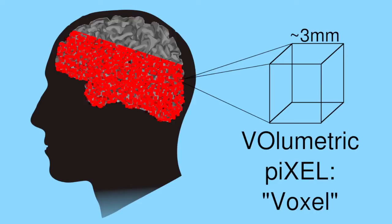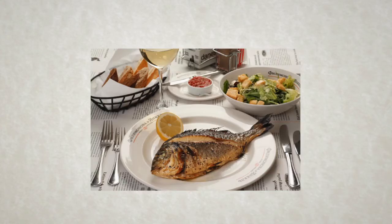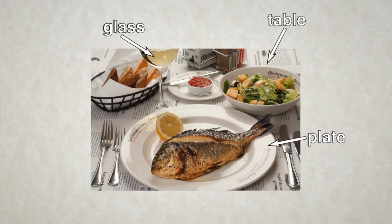In order to relate the recorded brain activity to the learned scene categories, we had to devise a way of objectively describing each of the viewed scenes in terms of these categories. We did this using a statistical technique called Bayesian inference. Using Bayesian inference, we calculate the probability that a new scene belongs to each of the identified categories based on the objects in the scene. For example, this scene of a grilled fish dinner would be assigned a high probability of belonging to the dining category, because it contains a table, a plate, and a drinking glass. It would also be assigned a high probability of belonging to the aquatic category, because it contains a fish. However, it would be assigned a low probability of belonging to the other remaining categories.